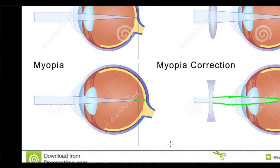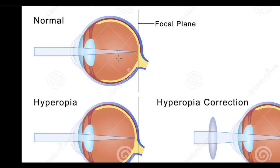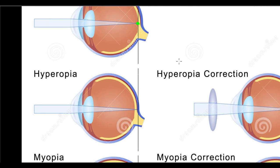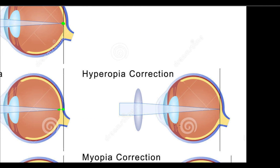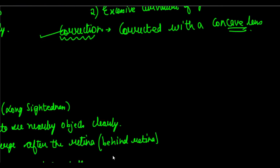Looking at the figure: in a normal eye, light converges at the retina. In a hypermetropic eye, light converges after the retina — it is supposed to converge at the retina but instead converges behind it. With a convex lens, the rays are already partially converging before entering the eye lens, and then they converge further so that they finally land on the retina, allowing the person to see near and far objects clearly.